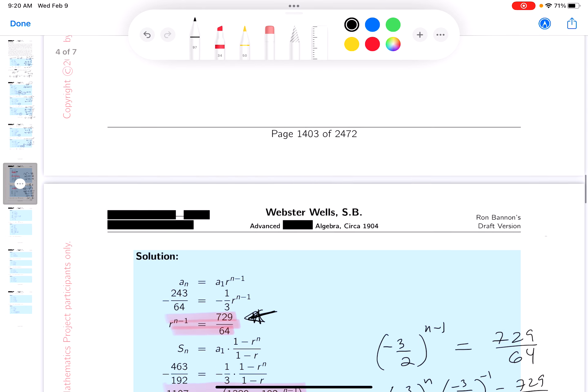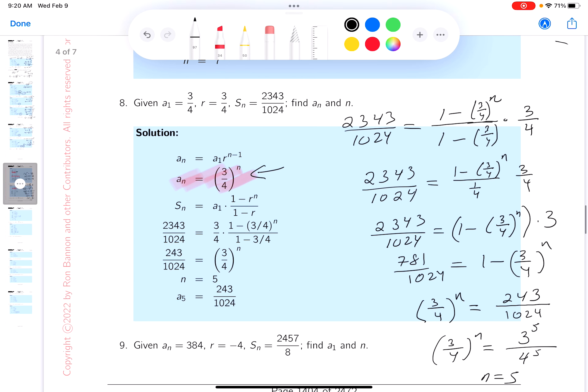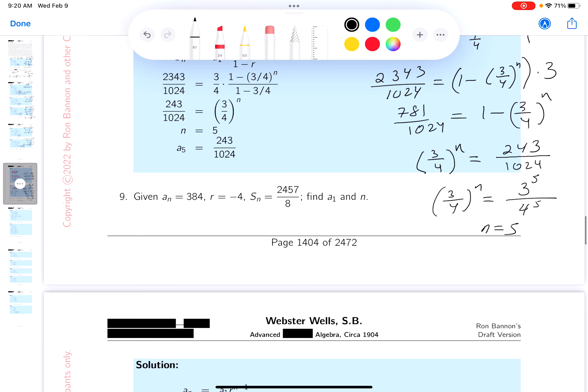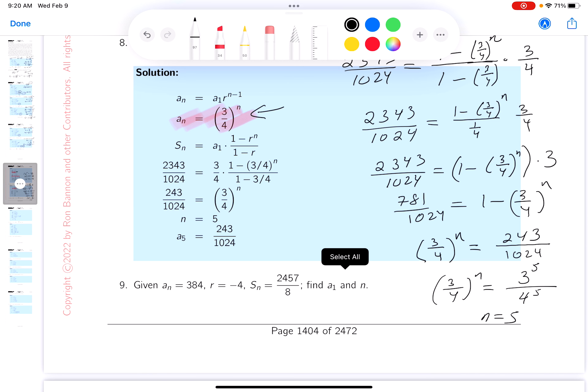Let's go back and make sure we've answered the question. What was the question again? That was a long problem. Did we do that problem? Oh, it's over here. An and n. What's An? An is the 243 over 1024. And what's the n? n is 5. Worked out pretty nicely. Thank you.